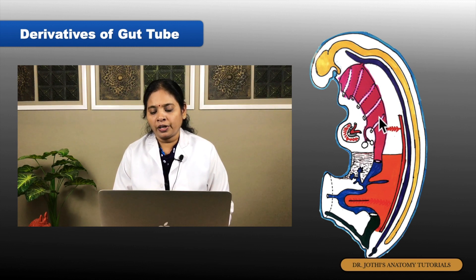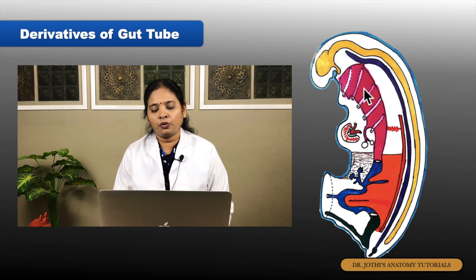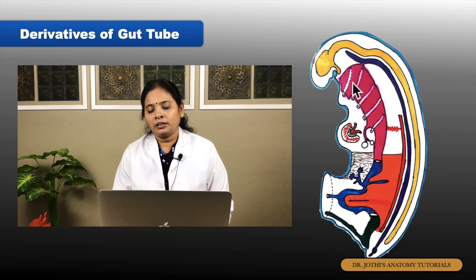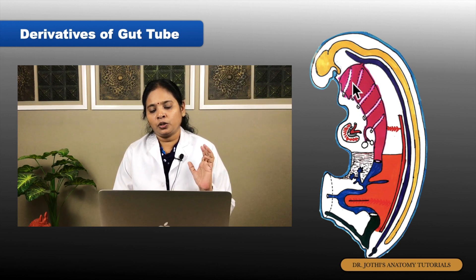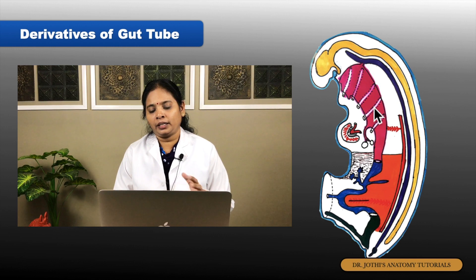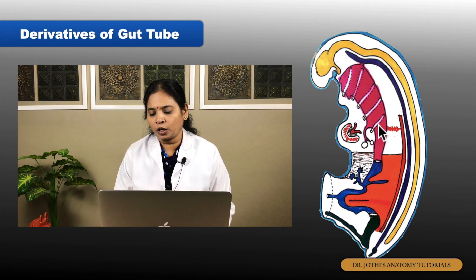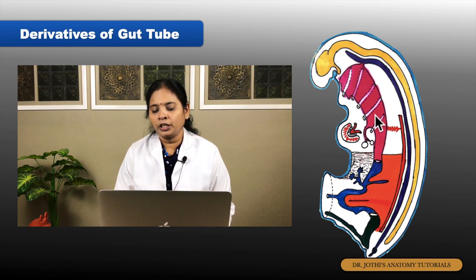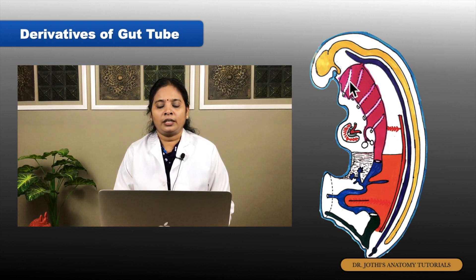What are the pharyngeal arches? Laterally, the foregut is bounded by an important structure called the pharyngeal arches. In the cranial part of the foregut, in the mesodermal thickening, it is going to form bar-like structures to form the future neck.